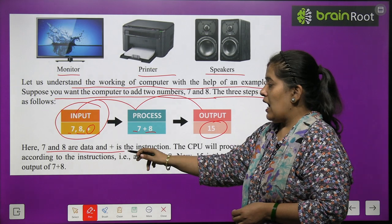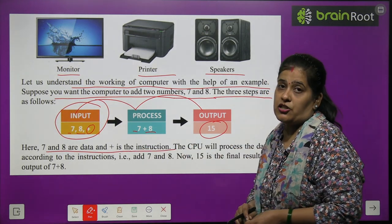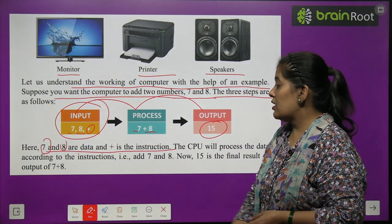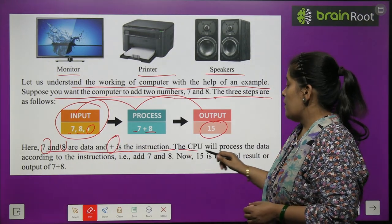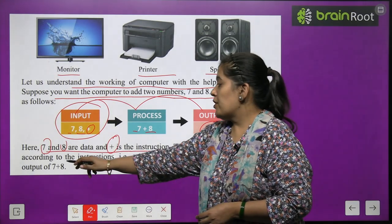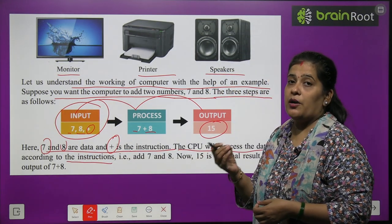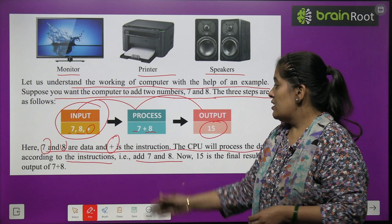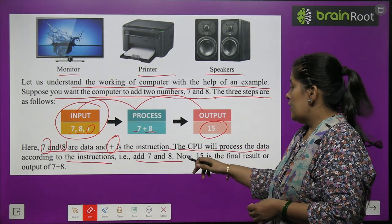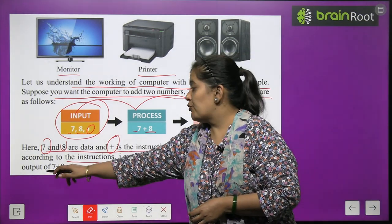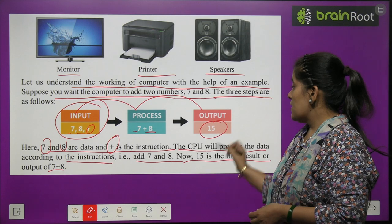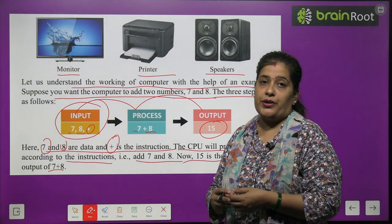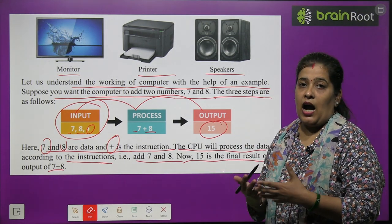Here 7 and 8 are data and addition is the instruction. The CPU will process the data according to the instruction — add 7 and 8. Now, 15 is the final result or output of 7 and 8.